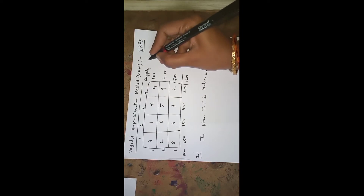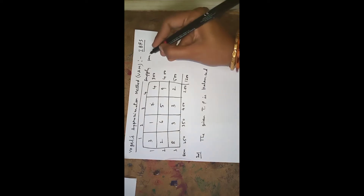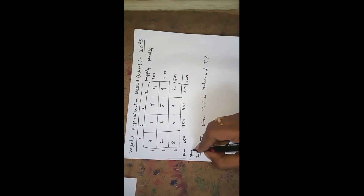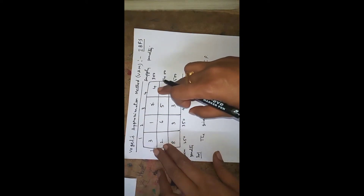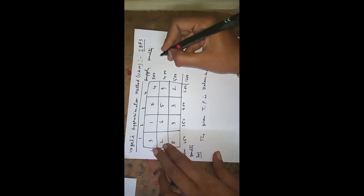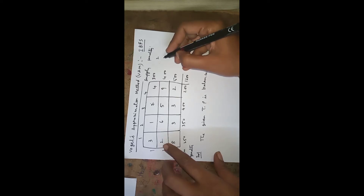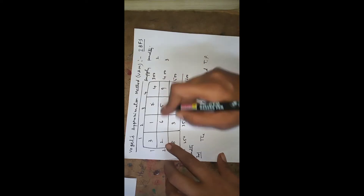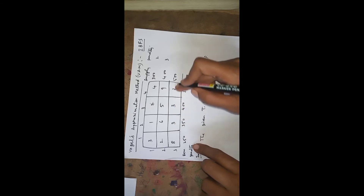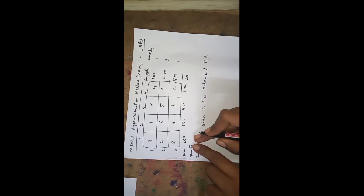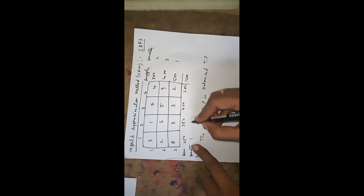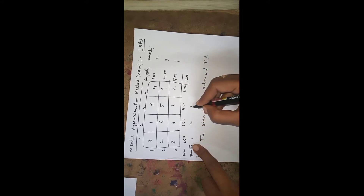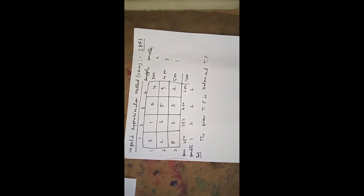The procedure of VAM is: in every row and every column we need to calculate penalties. The penalty is the difference between the two least numbers. In the first row, 1 and 3 are the two least numbers, so the difference is 2. In the second row, 2 and 5 are the two least numbers, difference is 3. In the third row, 3 and 2, difference is 1. For columns: first column difference is 1, second column 3 and 1 is 2, third column 5 and 3 is 2, fourth column 4 and 2 is 2.